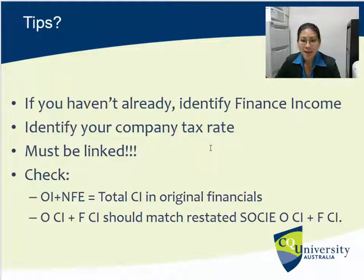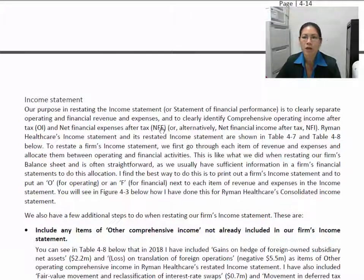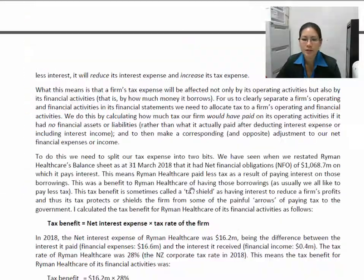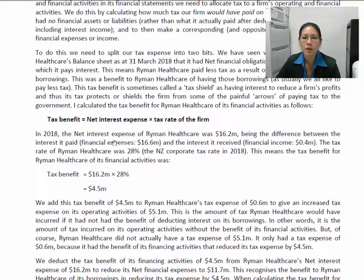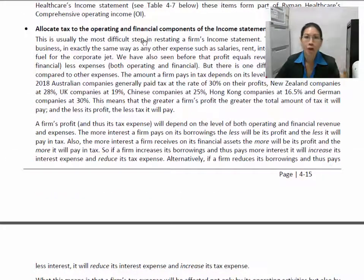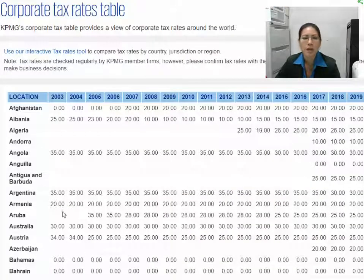Then we need to identify your company tax rate, because we're going to calculate the portion attributable to the financial section. This is easy to do as long as you know your company — which was part of assignment one — you'll know what country your company is domiciled in. You'll be able to simply click on the link that Martin has put, I think it's page 16 in chapter 4 of the study guide, where he explains about calculating your tax.